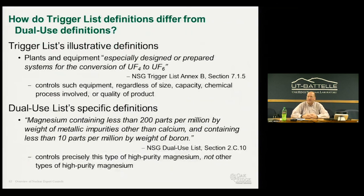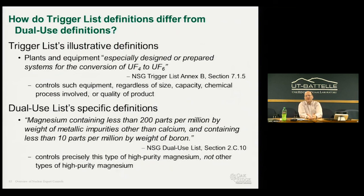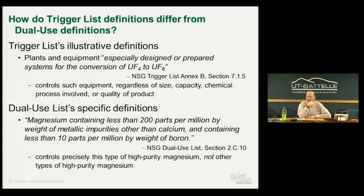The Trigger List uses illustrative definitions—for example, it controls any plants or equipment especially designed or prepared for conversion of UF-4 to UF-6, regardless of size, capacity, or chemical process. The dual-use list, by contrast, is very specific—like a call-out for magnesium requiring an exact purity and boron-equivalency specification. High-purity magnesium that does not meet the exact specifications is not captured. So the Trigger List is illustrative and broad, while the dual-use list is specific and precise.